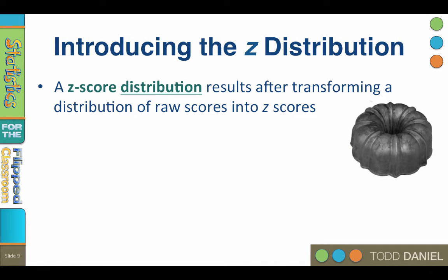A z-score distribution is the distribution that results after transforming any distribution of raw scores into z-scores. Think of a bundt pan — no matter what kind of cake mix you pour into it, German chocolate, yellow, white, or red velvet, it always comes out looking like a bundt cake. Similarly, no matter what distribution you pour into the z-score formula, it always comes out as a z-score distribution.